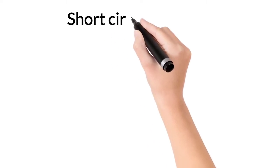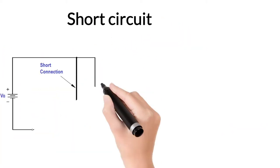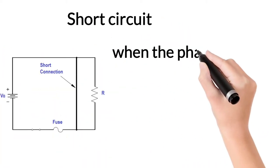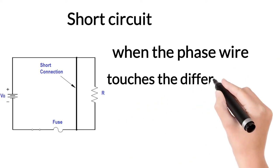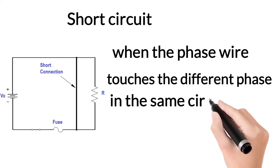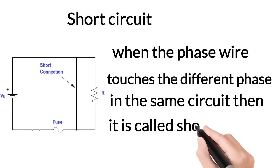The next type of electric circuit is a short circuit. The circuit in which the phase wire touches the other phase wire in the same circuit, then a high amount of current flows through the conductors, and the circuit is called a short circuit.